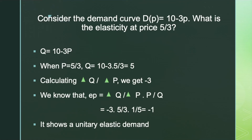Substituting into the elasticity formula: EP = (ΔQ/ΔP) × (P/Q) = minus 3 × (5/3) divided by 5, which equals minus 1. This implies that the quantity demanded is unitary elastic.